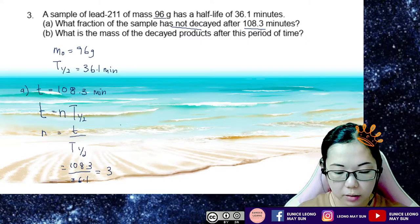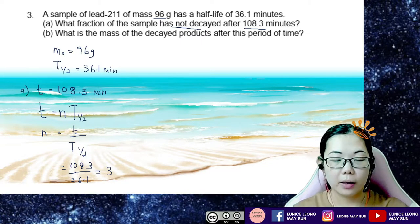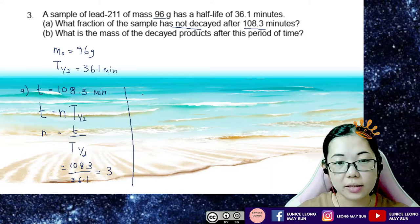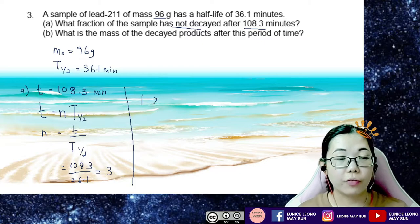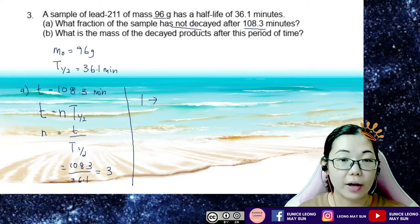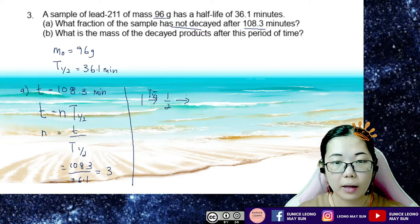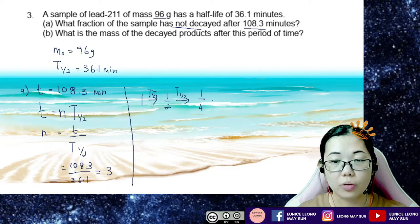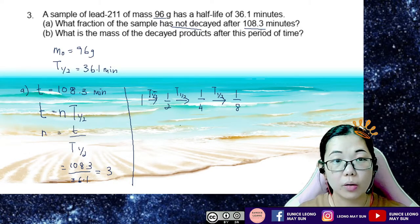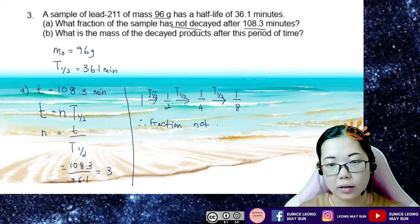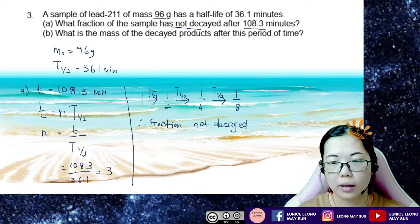To solve this, I use the decay series. At the initial state, we assume the fraction is 1 (full value). After the first half-life, half of 1 is 1/2. After the second half-life, 1/2 divided by 2 is 1/4. After the third half-life, 1/4 divided by 2 is 1/8. So the fraction that has not decayed is 1/8.